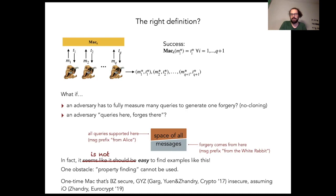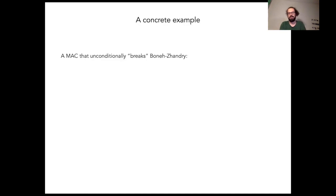In the Quantum Lightning paper, there was in fact constructed a MAC that is secure according to the Boneh-Zhandry definition, but insecure according to a one-time security definition put forward by Garg, Yuen, and Zhandry. But this was assuming indistinguishability obfuscation, and I don't think one can call it an intuitive example. This brings me to our first contribution.